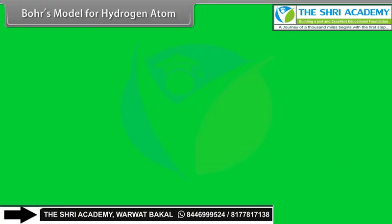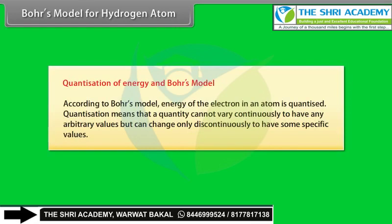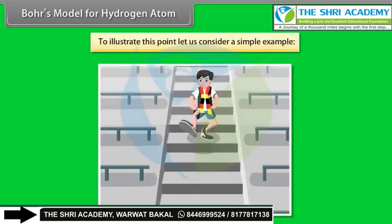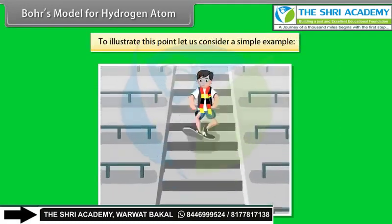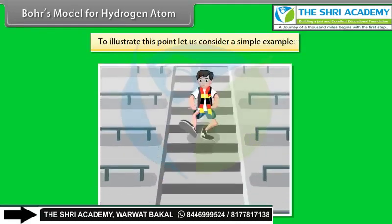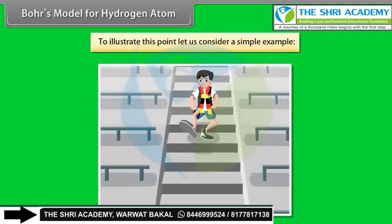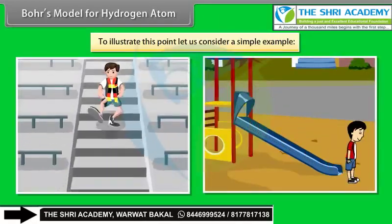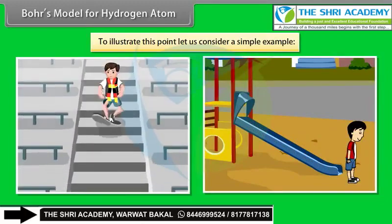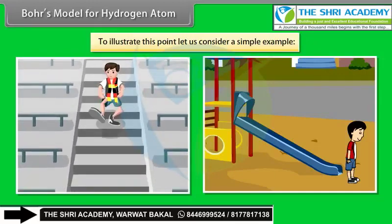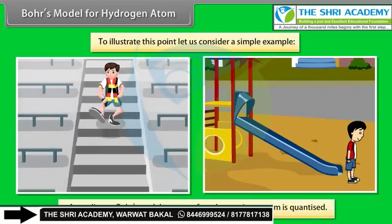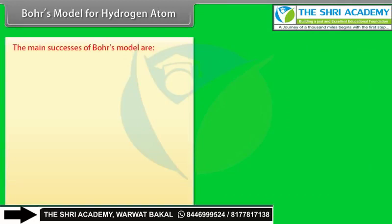Quantization of energy in Bohr's model means energy cannot vary continuously but changes only discontinuously to specific values. As an analogy, a person moving down a staircase has only certain definite energy values corresponding to each step — energy is quantized. A person moving down a ramp can have any value of energy — not quantized. Similarly, according to Bohr's model, energy of an electron in an atom is quantized.